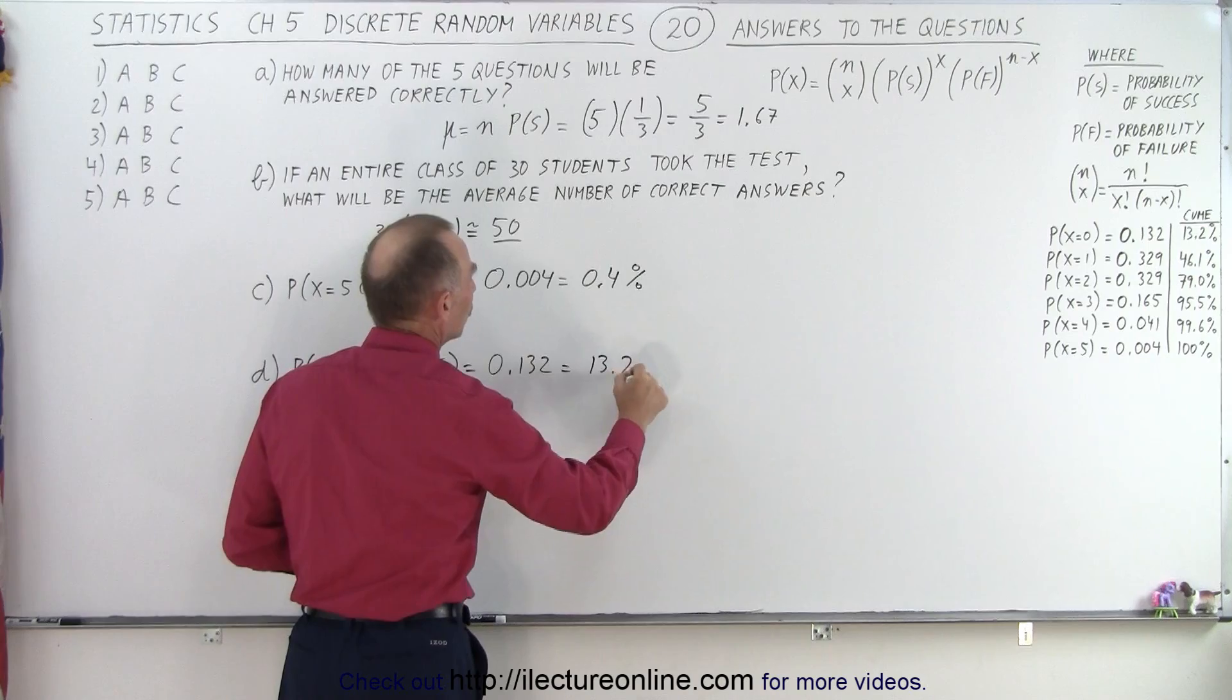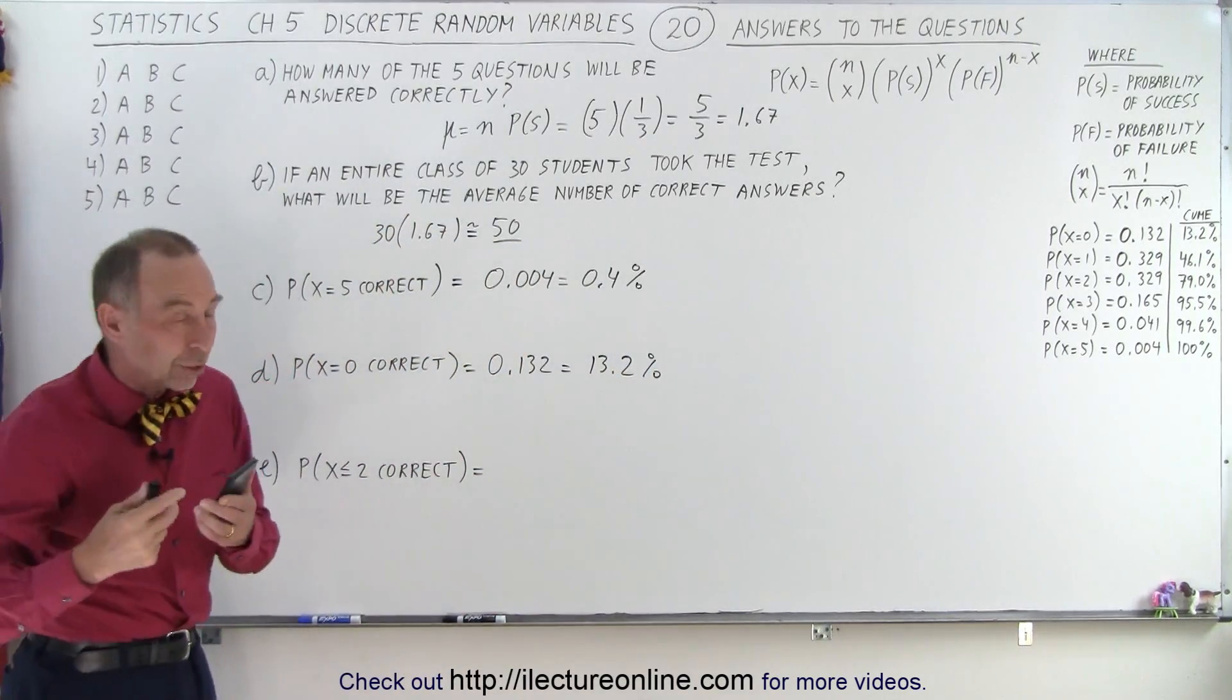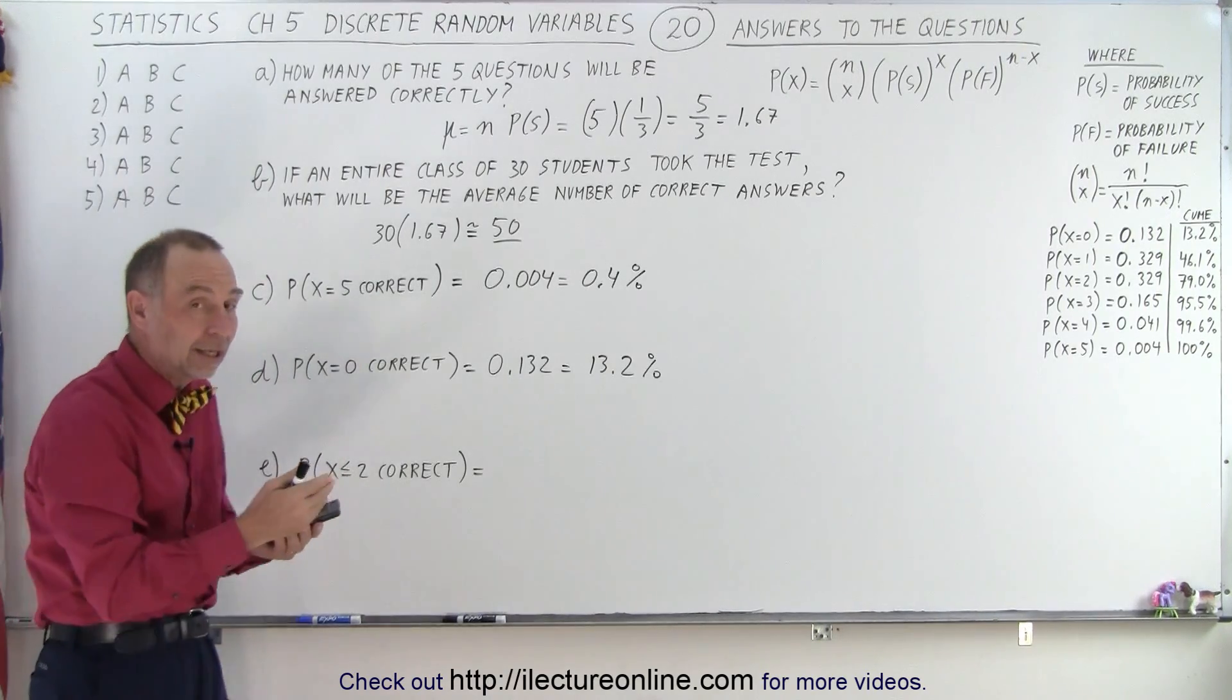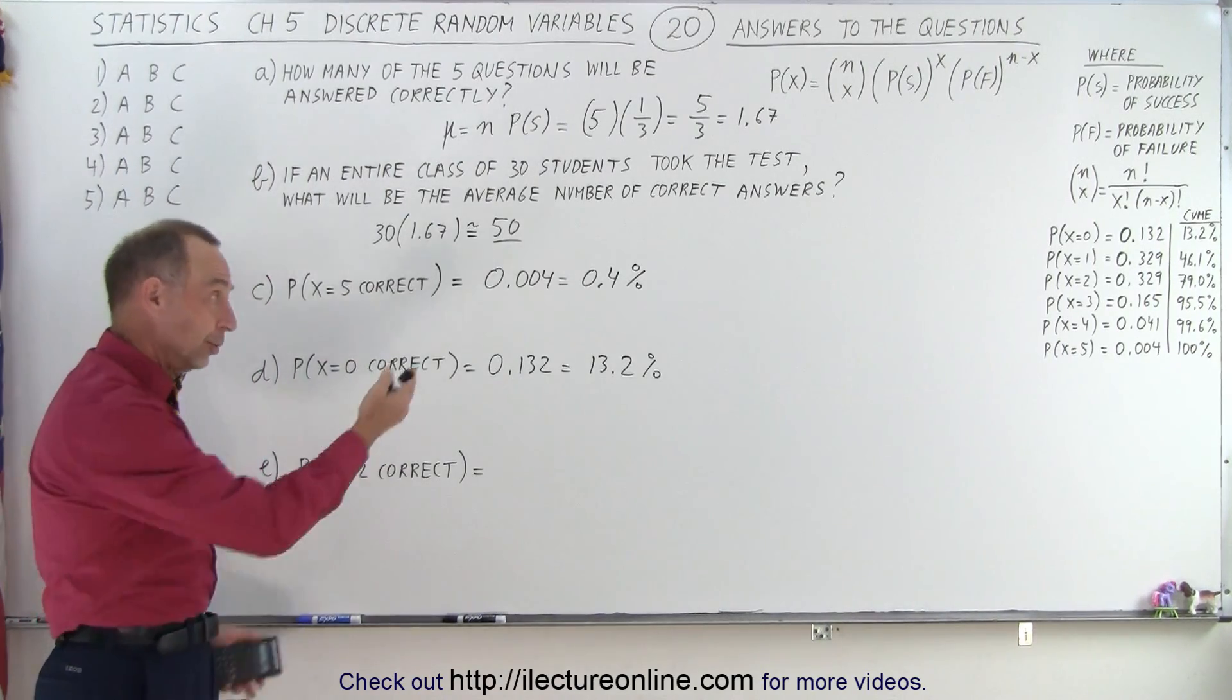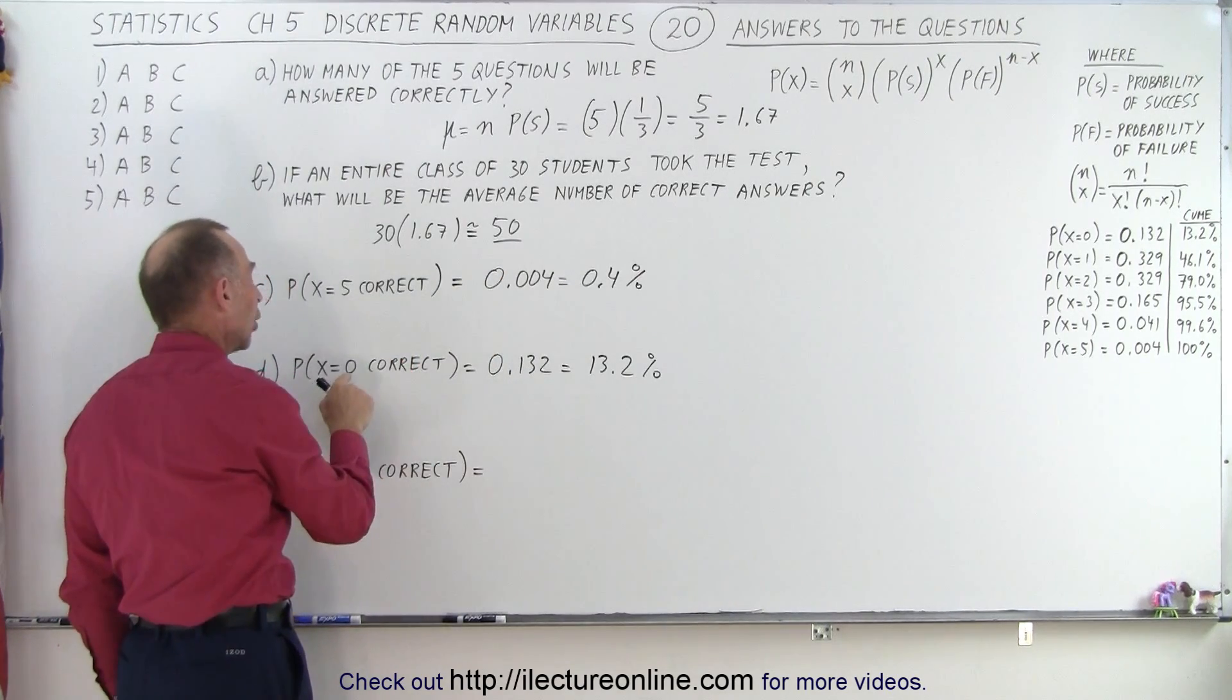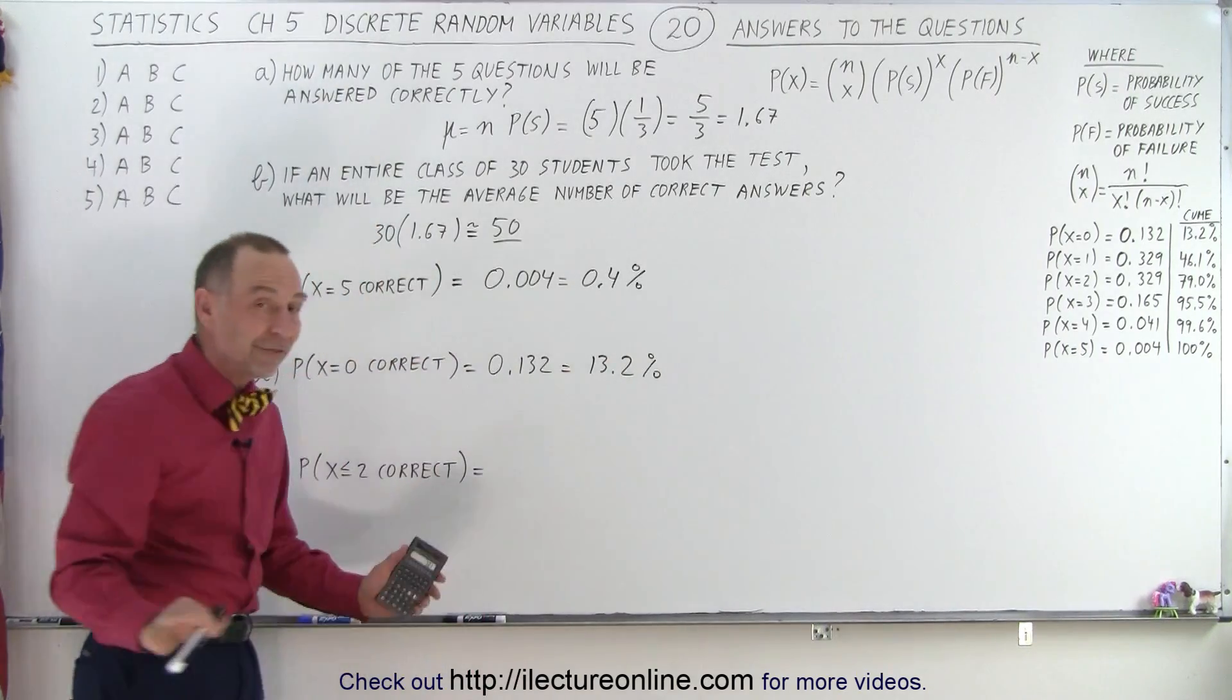Is equal to 13.2%. So notice that because the probability of having a question answered correctly by purely guessing is smaller than the probability of getting it wrong, notice the difference in the probability of getting all 5 of them correct or getting all 5 of them wrong, a big difference in probability.